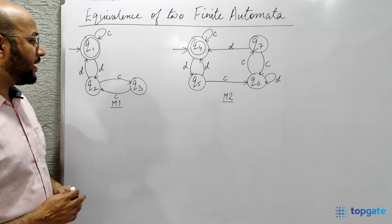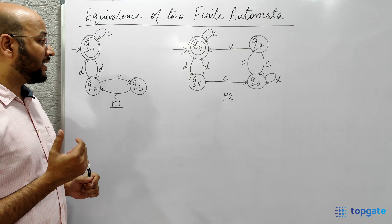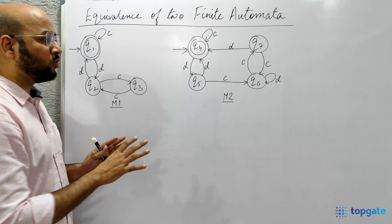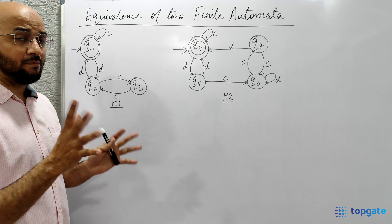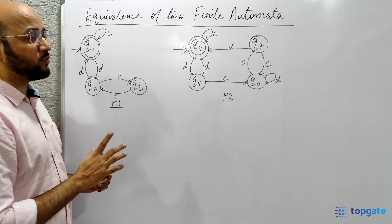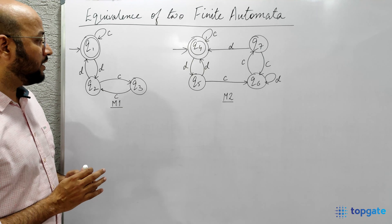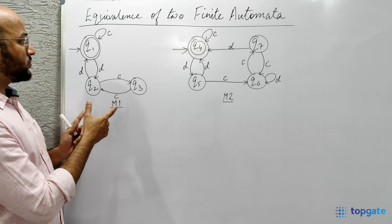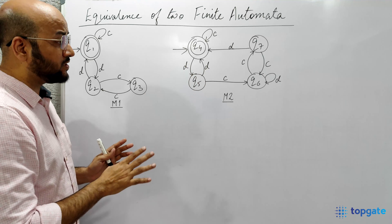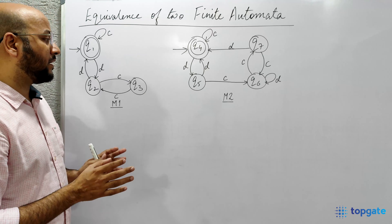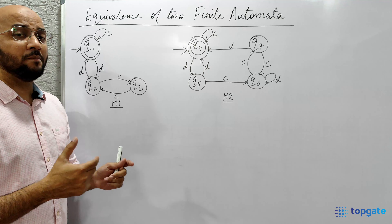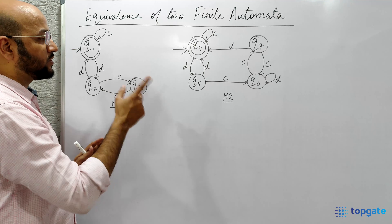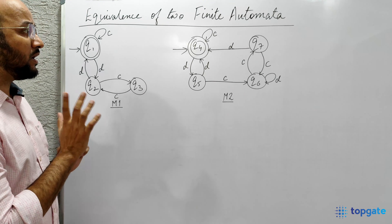The two machines will be equivalent if they produce the same set of output. That means if M1 and M2 are both accepting the same language, then we say both machines are equivalent. There might be a possibility that both machines look different — M1 has three states, M2 has four states — but they may still be equivalent because they produce the same set of outputs.